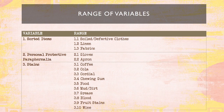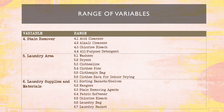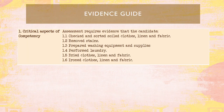The range of variables includes sorted items and personal protective equipment such as gloves and aprons. Types of stains on linens and fabrics include coffee, cola, cordial, chewing gum, mud, dirt, grease, blood, fruit stain, wine, and others. Stain removers include acid thinners, alkaline, or general-purpose detergent. The laundry area includes washers, dryers, and clothes lines. Laundry supplies and materials include sorting baskets, shelves, hangers, stain-removing agents, and so on.